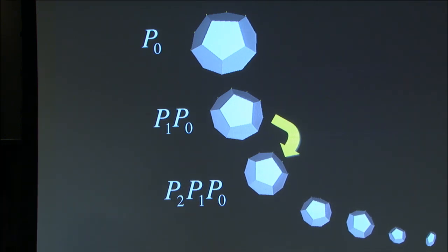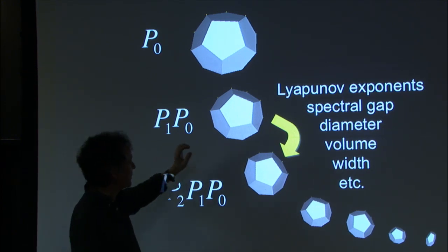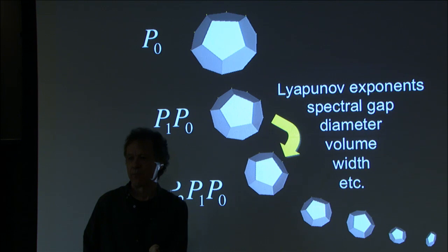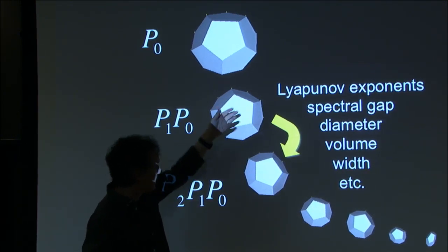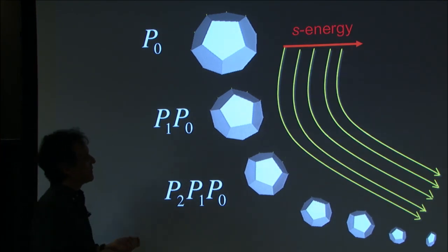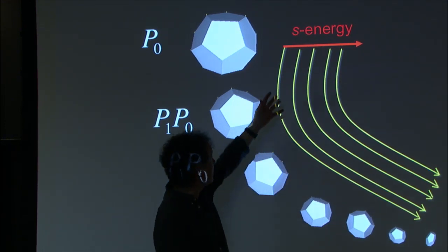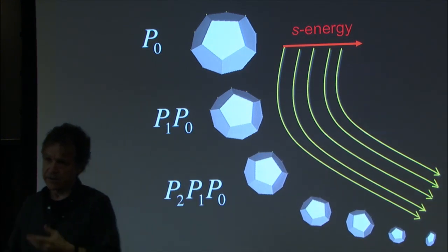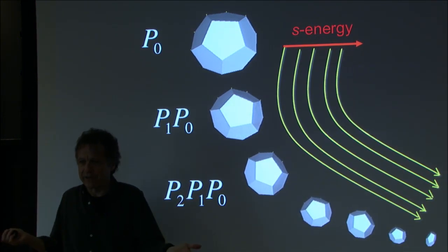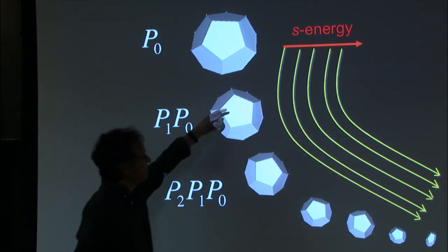Whereas the S-energy is a completely orthogonal view to spectral methods: for any value of s — like a temperature or inverse temperature — this is a sum over the entire orbit. This is very important because since these matrices are arbitrary, you could have the identity for a long time. When you multiply by the identity, you get stuck and nothing shrinks. So spectral techniques cannot possibly work, but here it doesn't matter because you simply integrate over the entire trajectory.